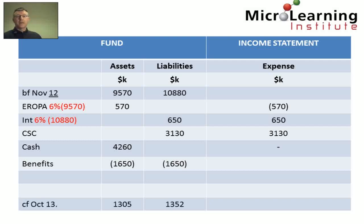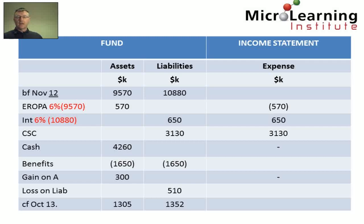Finally, we are told that the fair value of the plan assets and the present value of the plan liabilities were reviewed again in October 20X3 and found to be $13.05 million and $13.52 million respectively. We calculate the balancing figures: the balancing figure on the asset side reflects a gain on re-measurement of $300,000; however, there is also a loss on the re-measurement of the liabilities of $510,000. These are calculated purely as balancing figures. The net loss on re-measurement of $210,000 is taken to the income statement, this time to other comprehensive income.